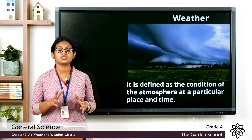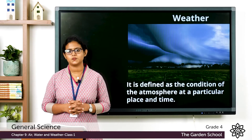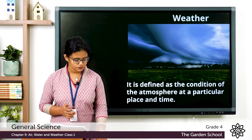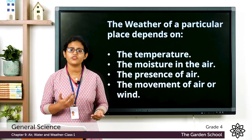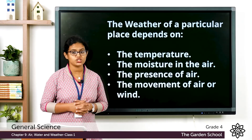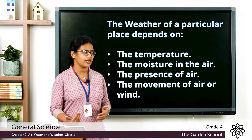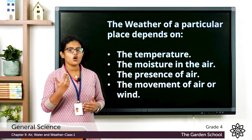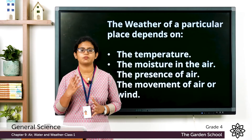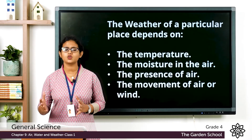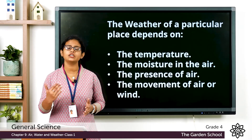So what is weather? It is the condition of the atmosphere at a particular place and time — that is called weather. Weather changes very quickly. The weather of a particular place depends on certain factors like temperature, the moisture in the air, the presence of air, and the movement of air or wind. Temperature means the extent of hotness or coldness of a place, or we can say it is the measure of how hot or cold a place is.